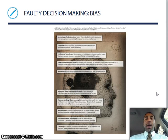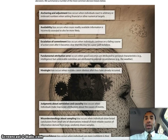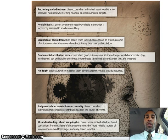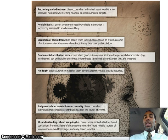Faulty decision-making bias. Anchoring and adjustment bias occurs when individuals react to arbitrary or irrelevant numbers when setting financial or other numerical targets. Availability bias occurs when more readily available information is incorrectly assessed to also be more likely. Escalation of commitment bias occurs when individuals continue on a failing course of action even after it becomes clear that this may be a poor path to follow.